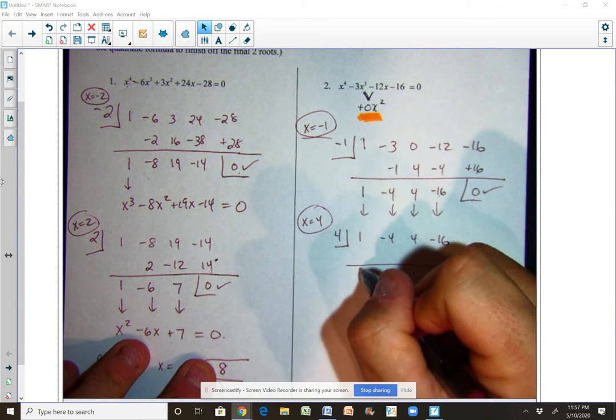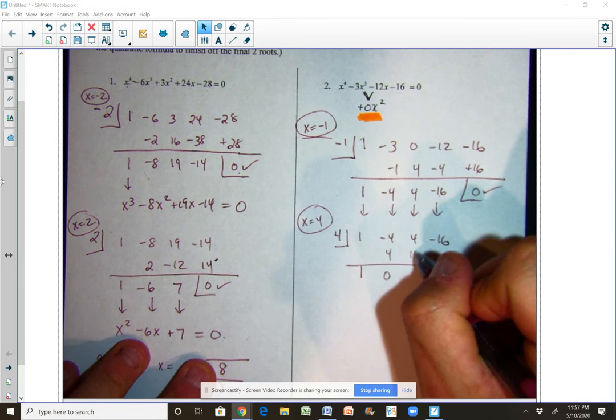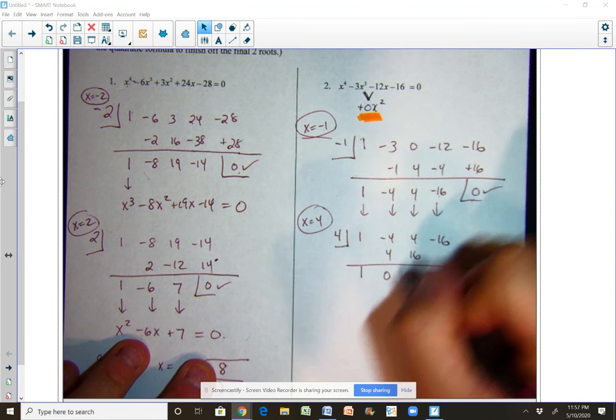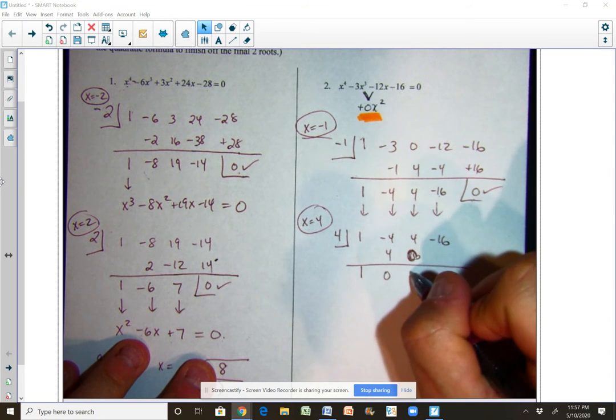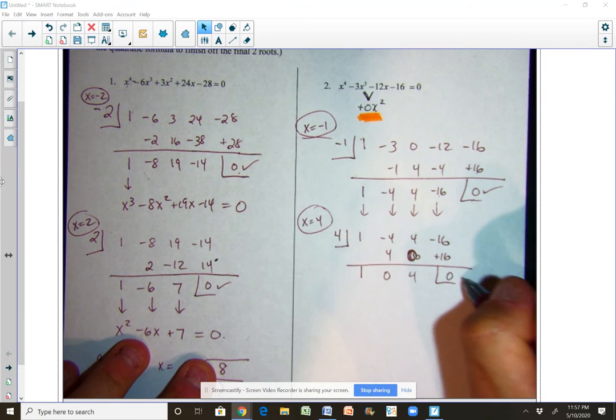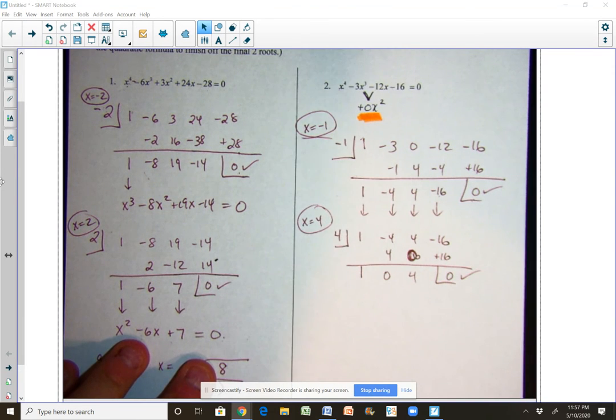So we add straight down, multiply diagonally, add straight down, multiply diagonally, and that's a zero, add straight down and multiply diagonally, and we get again a remainder of zero—it's what we expected.